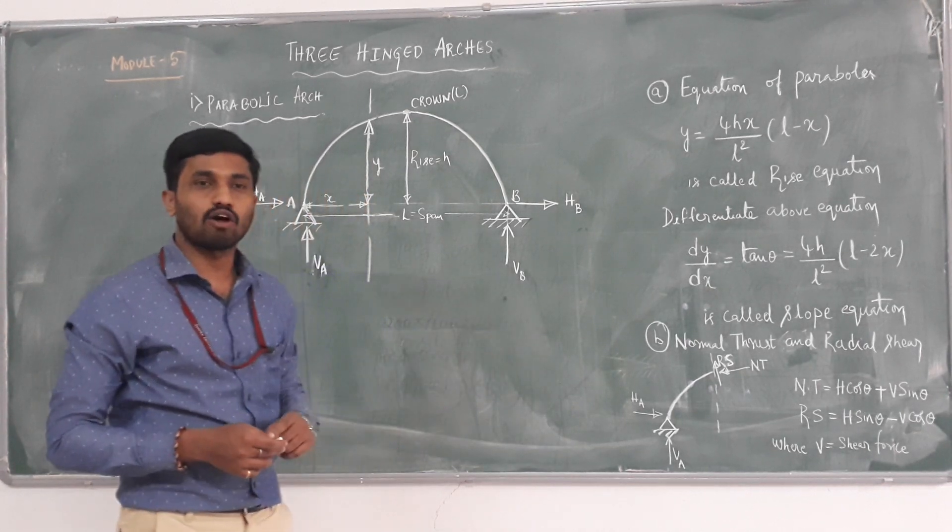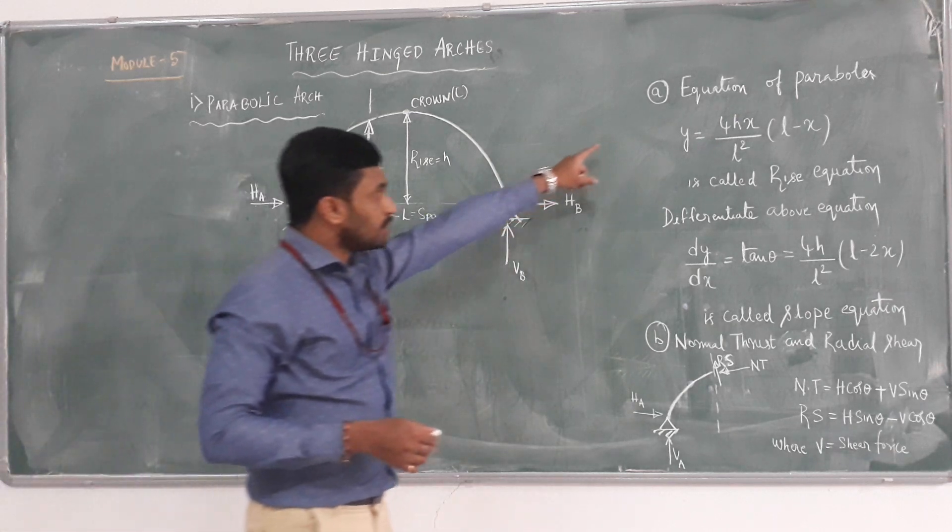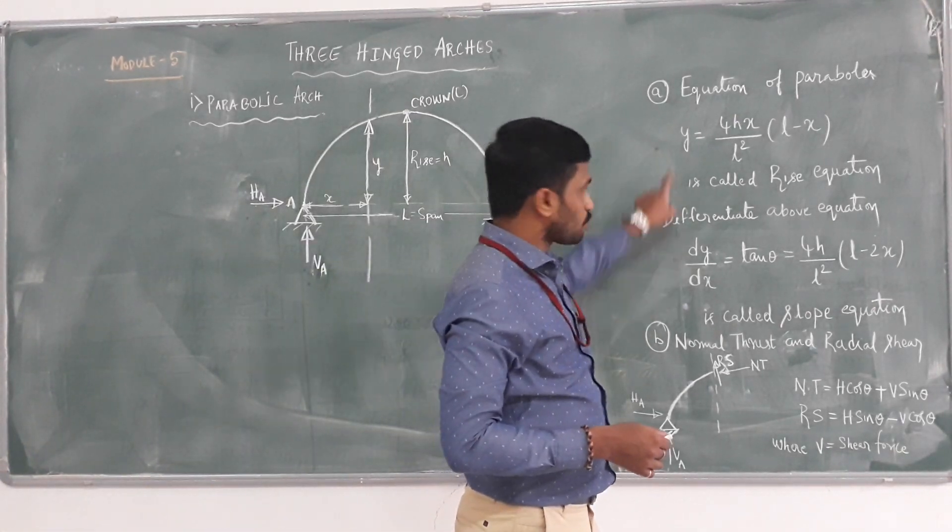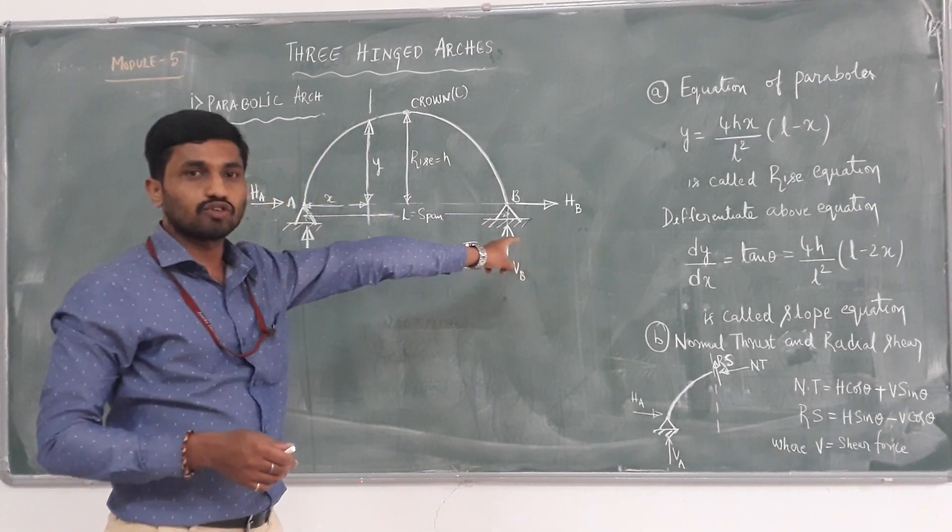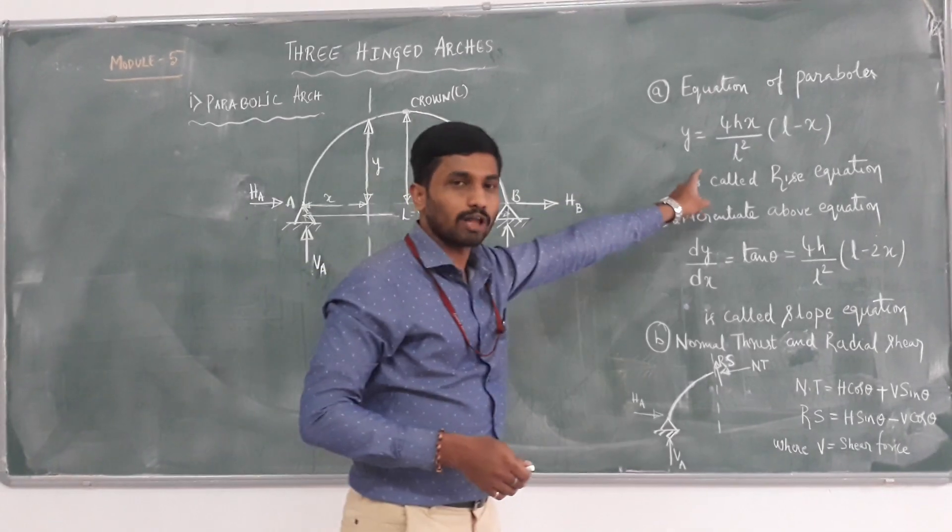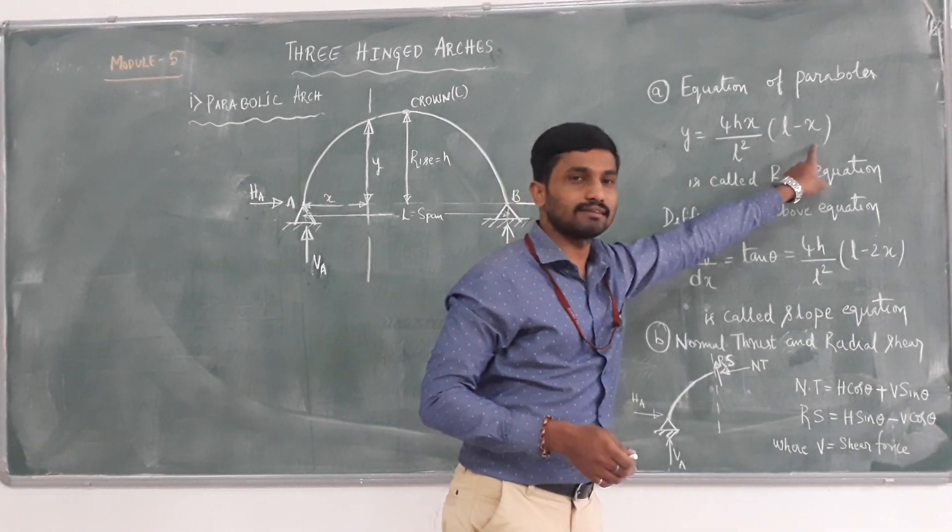In second step, after finding the external support reactions, we are going to determine slope as well as Y value. We know that it is a parabolic arch, so we know that equation of parabola: Y equals 4HX by L square into L minus X.